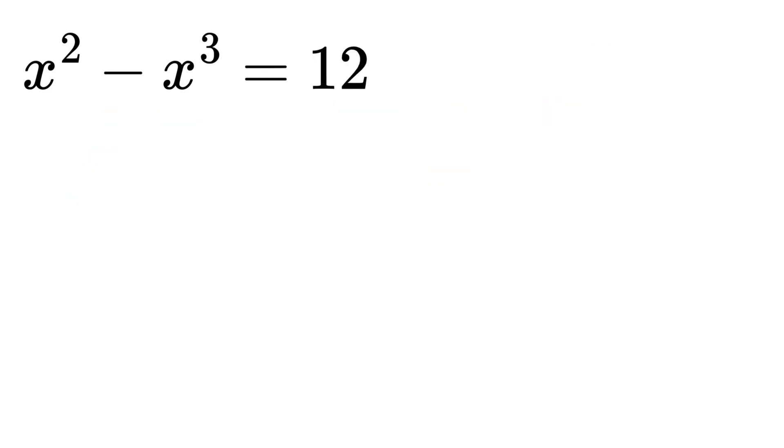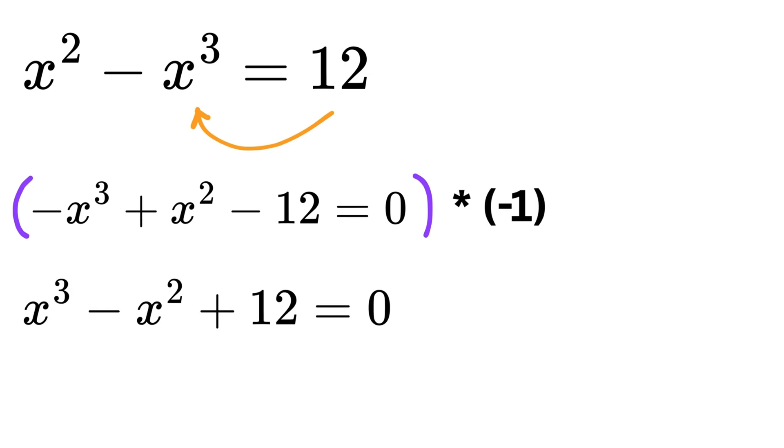Now, in order to find the other two roots, we will factorize this equation. For that, first take this 12 on the left-hand side and rearrange this equation to make it minus of x cubed plus x squared minus 12 equals 0. Or, multiply both sides by minus 1 to get x cubed minus x squared plus 12 equals 0.